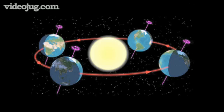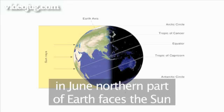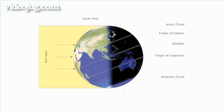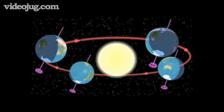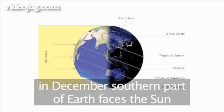As the Earth travels around the sun, in June the northern part of the Earth is leaning closer to the sun, causing long days and warmer weather. Likewise, during December, the southern part is tilted towards the sun, giving that part of the Earth longer days and warmer weather.